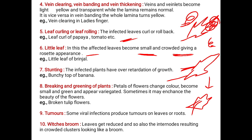Next comes the formation of tumors. Some viral infections produce tumors on leaves or on the roots, where we can find the infectious cells of the viruses.